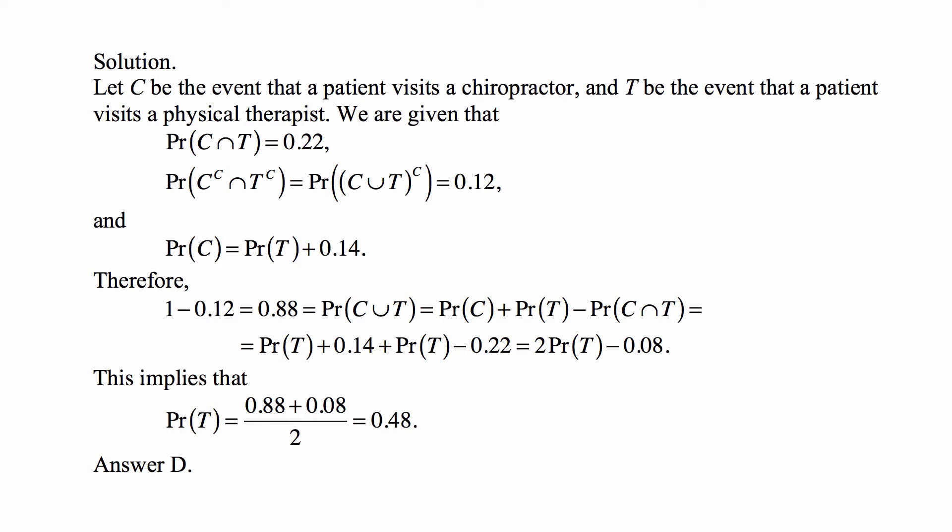Let C be the event that the patient visits a chiropractor, and T be the event that the patient visits a physical therapist. Then we are given that the probability of the intersection of C and T is 0.22.